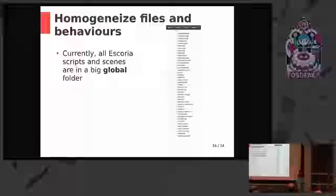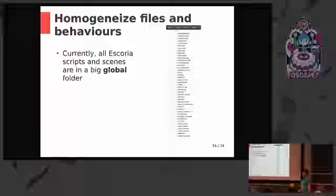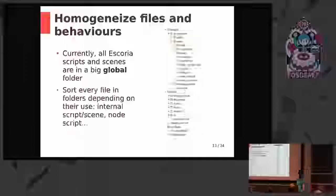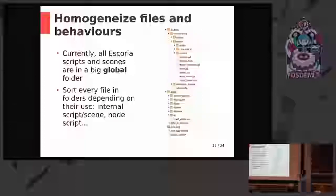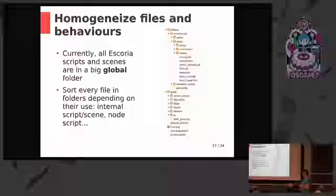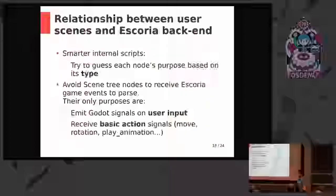This is Escoria — a whole bunch of scripts in one folder named 'global'. As you can imagine, this is a pain. I want it to look more like this — more organized with different folders. Basically it's sorting all the source code, but it also means reorganizing the functions into the scripts, which is a lot of work.